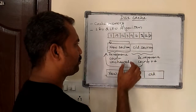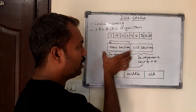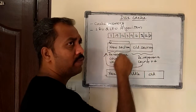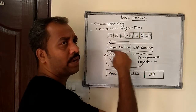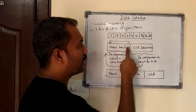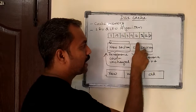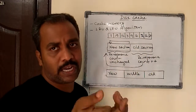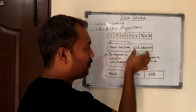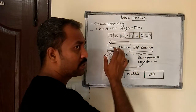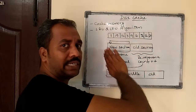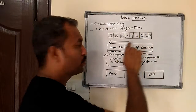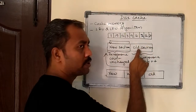What happens here is that the pages in the new section will be here, and as time goes on, they will move one after another. Whenever a page has reached the VOD section at a later time, it has spent enough time in the queue — it is only after spending a longer time in the queue that it can reach into the VOD section.